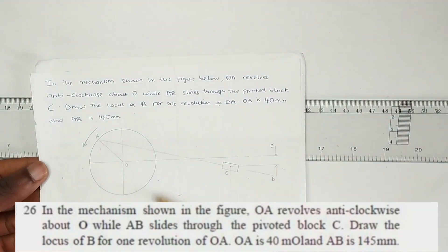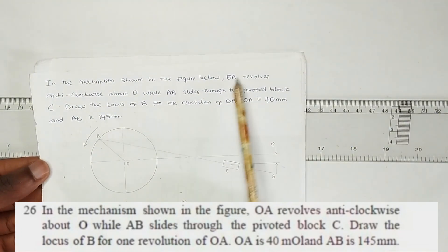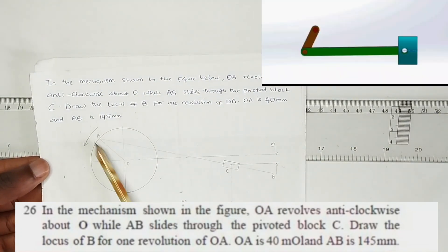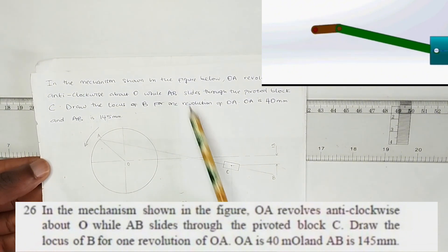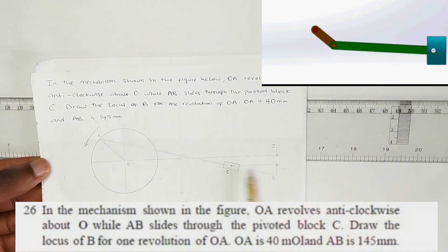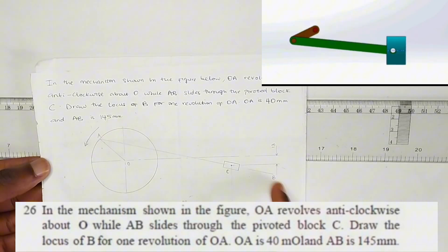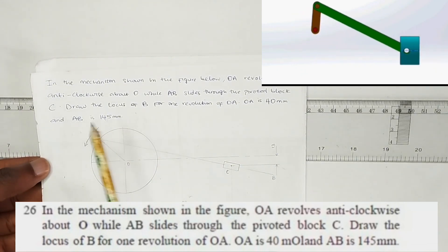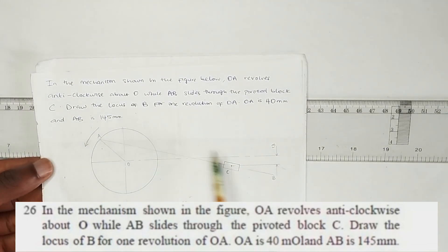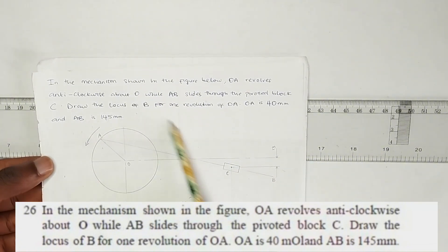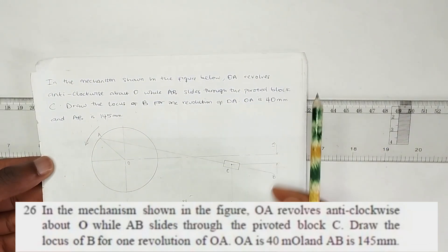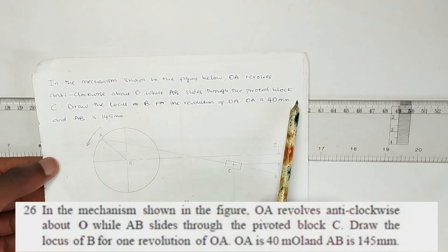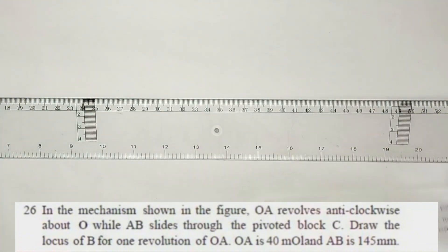In the mechanism shown in the figure below, OA revolves anticlockwise about O. AB slides through the pivoted block C, in the motion of a link mechanism. We are asked to draw the locus of B for one revolution of OA, that is when OA moves round once, the locus of B as it is sliding. We have been told that OA is 40mm and AB is 145mm.